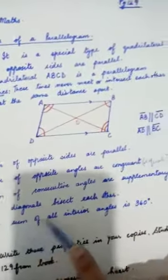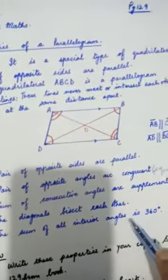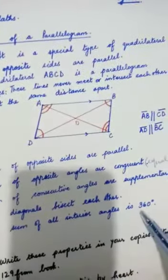The last point: the sum of all interior angles is 360 degrees. This is obvious because we have done this in previous lessons—the sum of interior angles of all quadrilaterals equals 360 degrees.